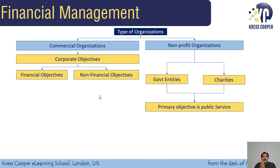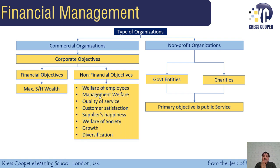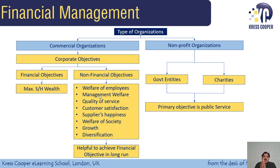There are two objectives of commercial organizations. One is a financial objective; the other is a non-financial objective. The financial objective means to maximize the wealth of the shareholders. Non-financial objectives include welfare of the employee, welfare of the management, quality of services, customer satisfaction, supplier's happiness, welfare of the society, growth, and diversification. These non-financial objectives always help the organization to achieve the financial objectives in the long run. Our core discussion in this subject will be on the financial objective and related decisions.